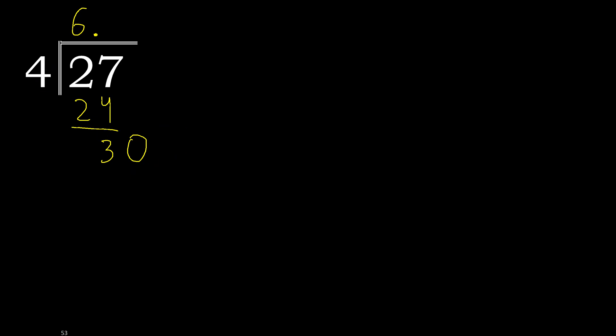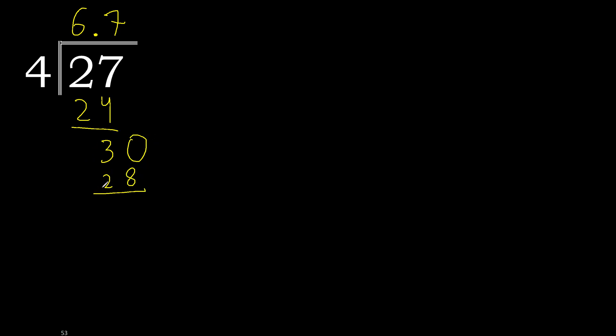4 multiply by which number is nearest to 30 but not greater? 4 multiply by 8 is 32 — is greater. 4 multiply by 7 is 28 — is not greater. 30 minus 28 is 2.